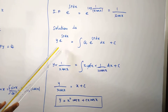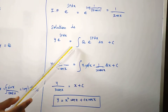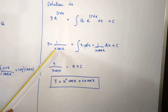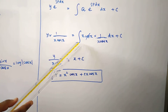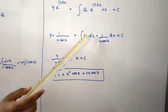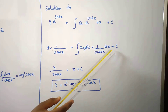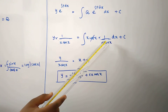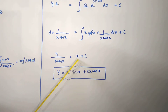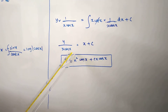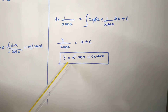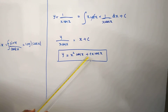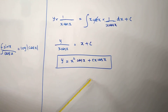The solution is y into e^(∫P dx) equals integral of Q into e^(∫P dx) dx plus c. So y into 1/(x·cos(x)) equals integral of x·cos(x) into 1/(x·cos(x)) dx plus c. The x·cos(x) terms cancel, leaving integral of dx, which is x plus c. Cross multiplying: y equals x·cos(x) · x plus c·x·cos(x), that is y equals x²·cos(x) plus c·x·cos(x).